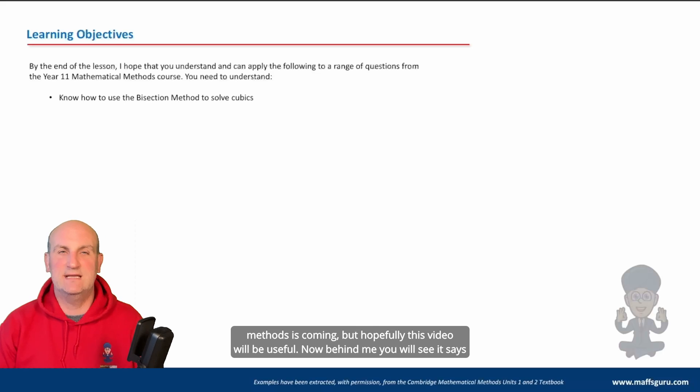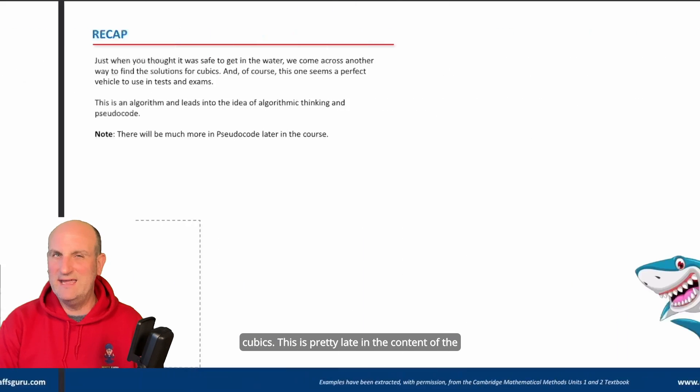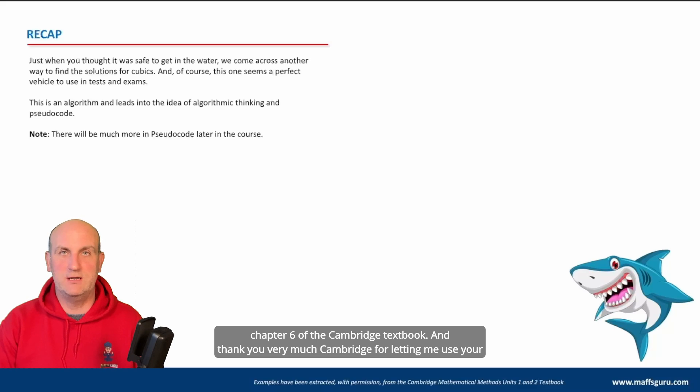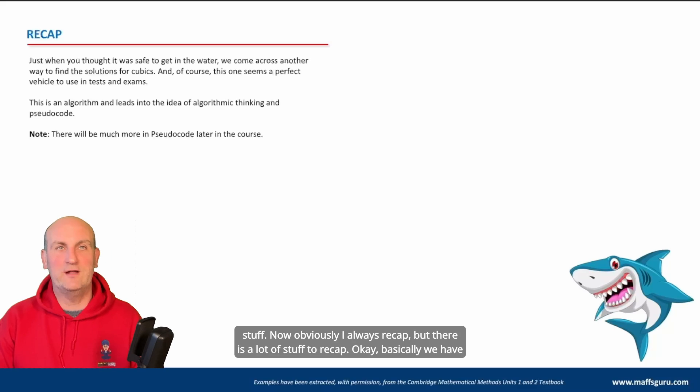Behind me you will see it says learning objectives, and basically it just says know how to use the bisection method to solve cubics. This is pretty late in the content of the chapter that we are dealing with, which is chapter six of the Cambridge textbook. Thank you very much Cambridge for letting me use your stuff. Obviously I always recap, but there is a lot of stuff to recap.